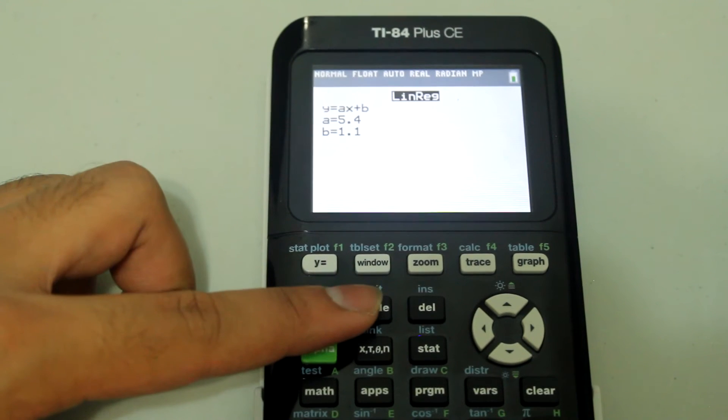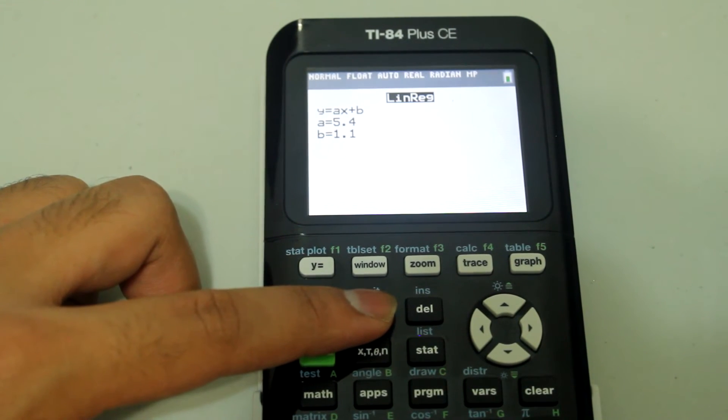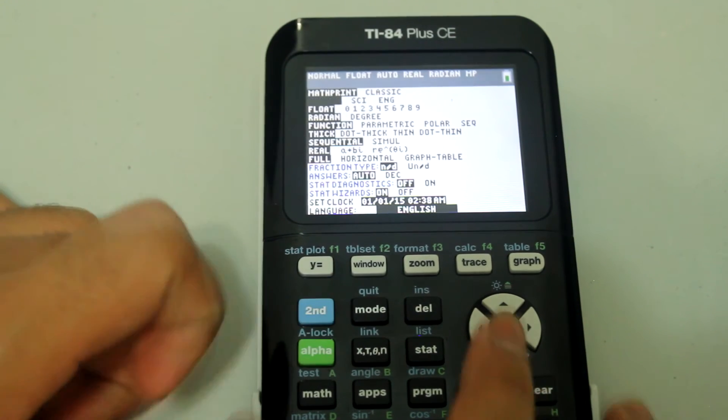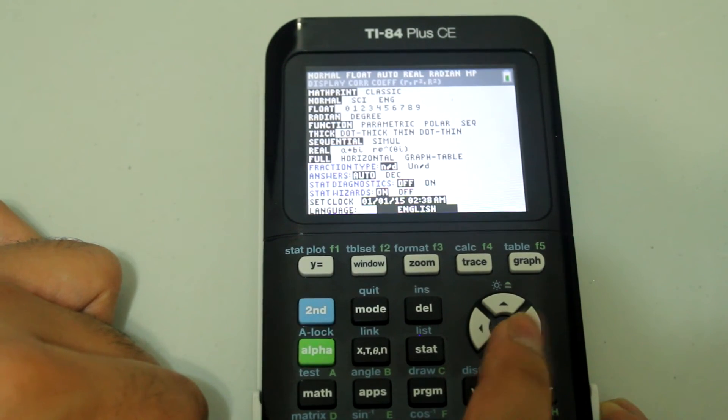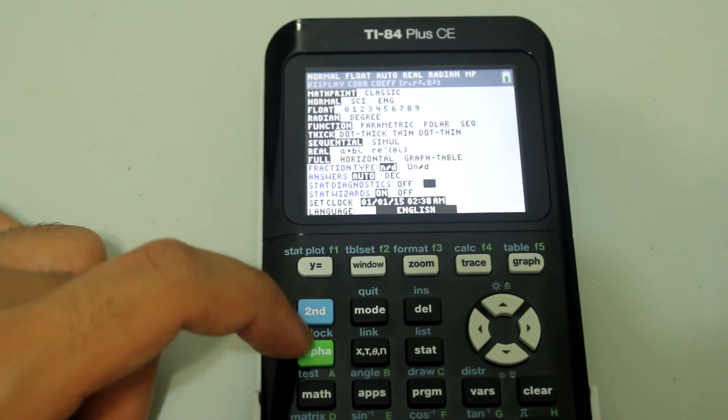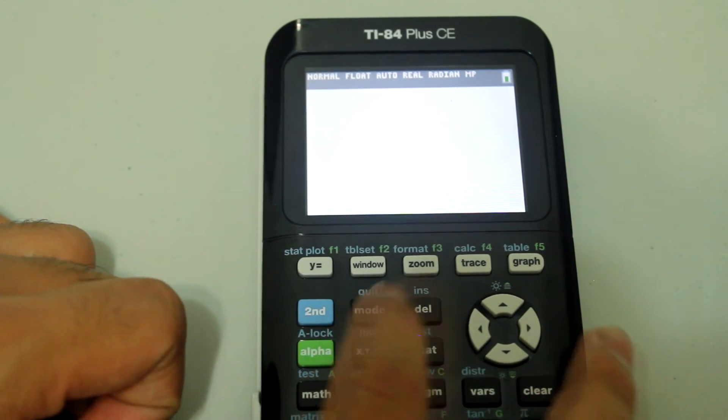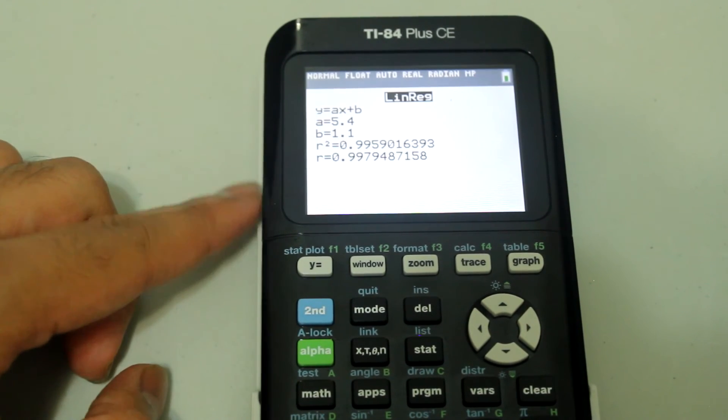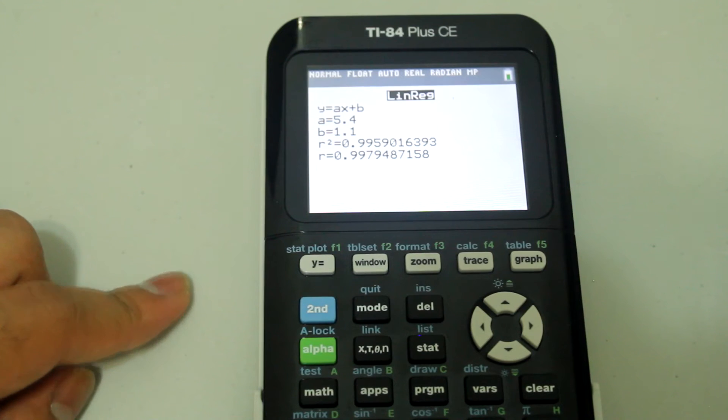However, if you wanted the correlation coefficient or the correlation of determination, you can hit mode, go down to STAT diagnostics and turn that on. Now if you quit this menu and you just select this and enter, enter again, you're given the correlation coefficient and the correlation of determination.